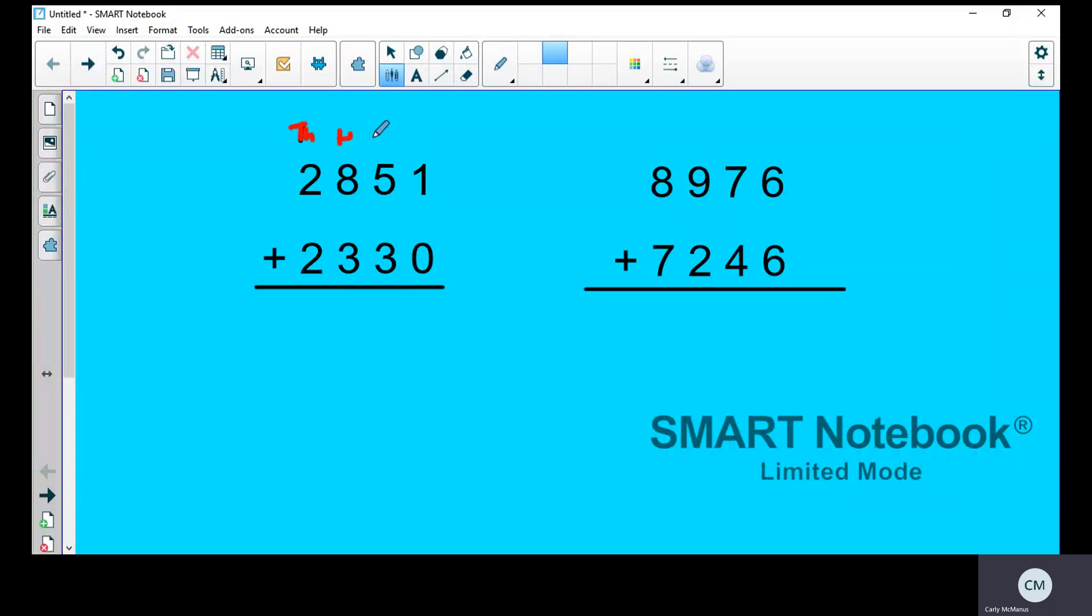So we've got thousands, hundreds, tens, and ones. Remember when we're adding that we start in the ones column.